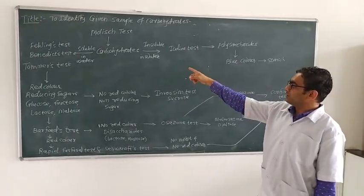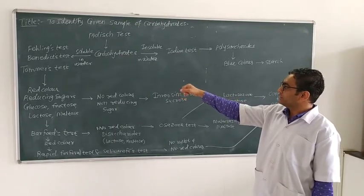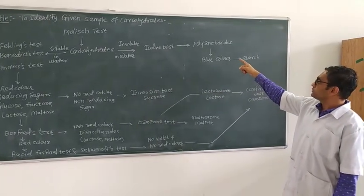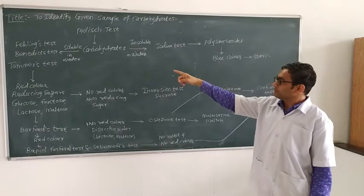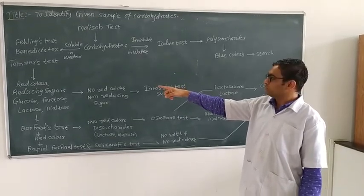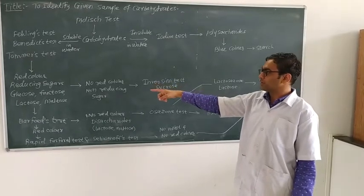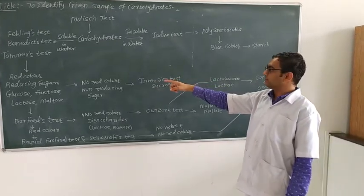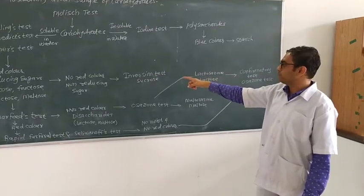When carbohydrate is soluble in water, we will perform the Fehling test, Benedict test, and Thomas test. If carbohydrate is not soluble in water, we perform the Iodine test, which gives a blue color, indicating starch — a polysaccharide. After Fehling or Benedict test, a red color produced indicates a reducing sugar. Examples of reducing sugar are glucose, fructose, lactose, and maltose. If no red color is released — absence of reducing sugar — we perform the hydrolysis test. An example for this is sucrose.